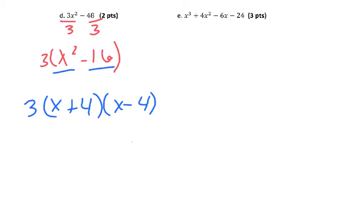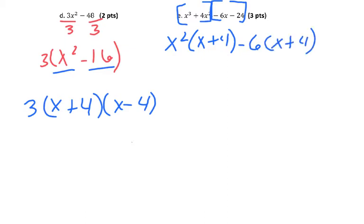And E, this is grouping, so you could group them together first. GCF in x cubed and 4x squared would be x squared, and you're left with x plus 4. GCF in negative 6x and negative 24 was negative 6. You have x plus 4. Since I have x plus 4 in both terms, I can pull that out. And all you're left with is x squared minus 6.